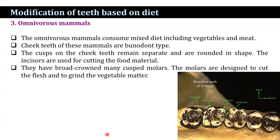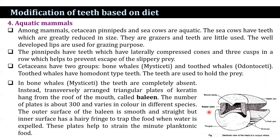In omnivorous mammals, which consume a mixed diet including vegetables and meat, the cheek teeth are of different types; the cusps of the cheek teeth remain separate, and the incisors are used for cutting food material. They have broad low-cusped molars designed to cut flesh and grind vegetable matter. In aquatic mammals, Cetacea, pinnipeds, and sea cows are aquatic in nature. Sea cows have teeth greatly reduced in size; they are grazers and teeth are little used. Pinnipeds have teeth which are laterally compressed with three cusps in a row, which helps prevent the escape of slippery prey.